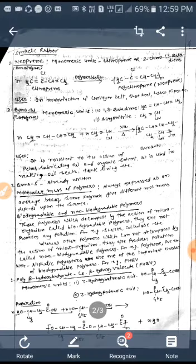Next, Buna N is a co-polymer. The first monomeric unit is 1,3-butadiene and the second monomeric unit is acrylonitrile: CH2=CH-CN. These two monomeric units combine to produce Buna N, which is used in organic solvents.